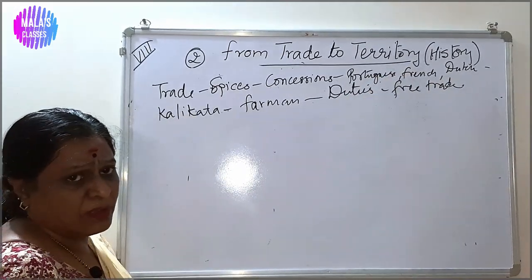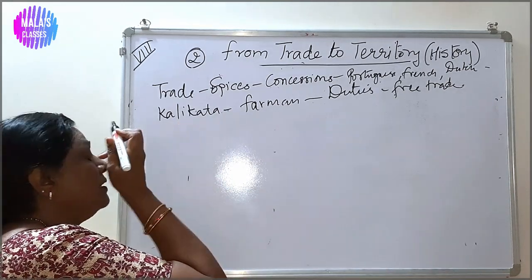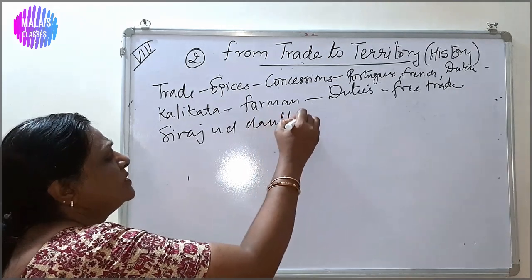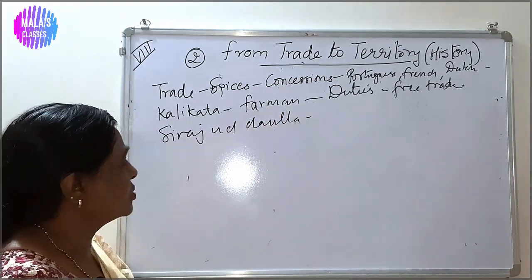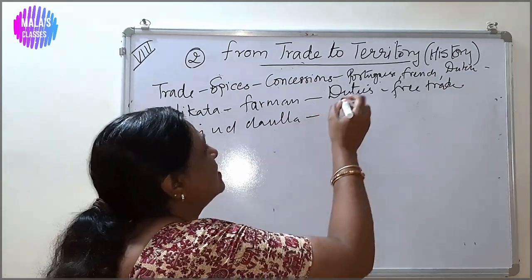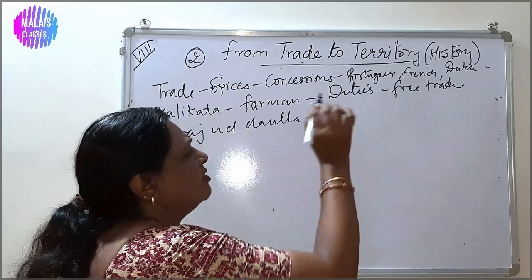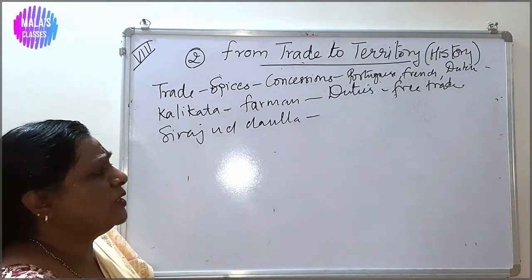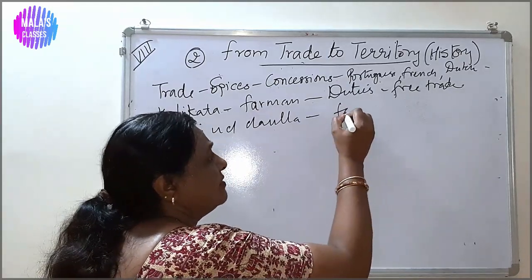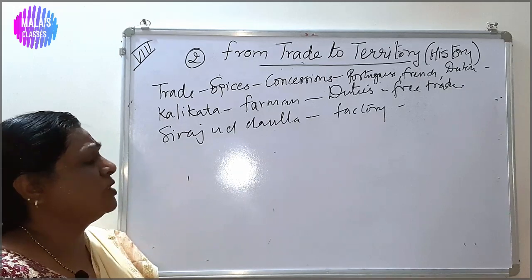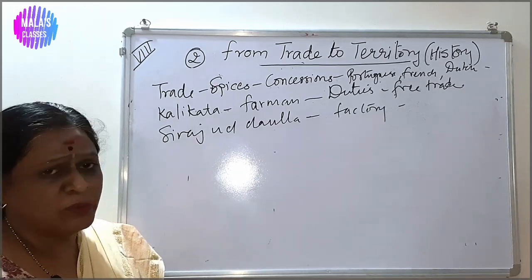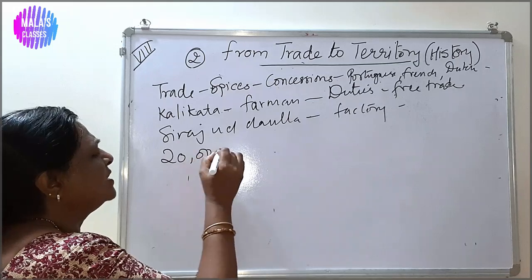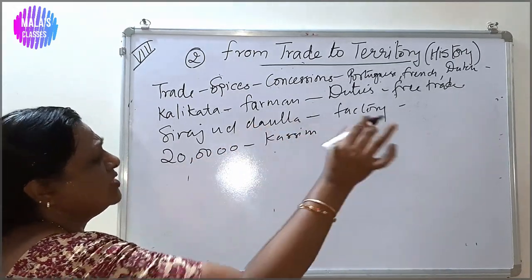After the death of Aurangzeb, it was Alivardi Khan and then Siraj ud-Daulah who became the Nawab of Bengal. Siraj ud-Daulah wanted to make Bengal a strong province. But the British, armed with the farman, were trading freely without paying duties. Private trade was also happening. When he objected, by that time the British had already established their factory and were doing well.